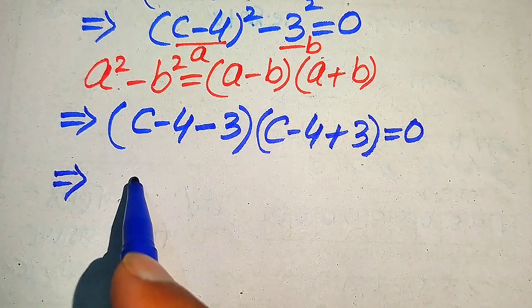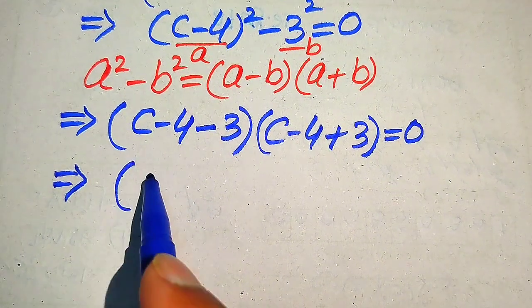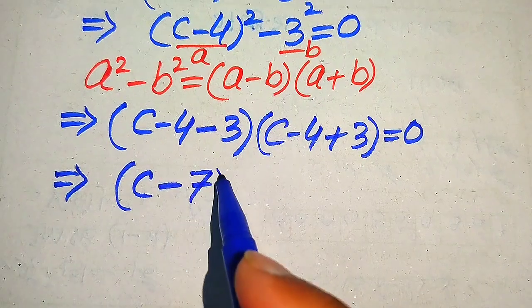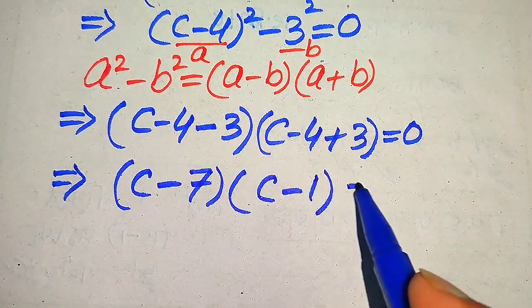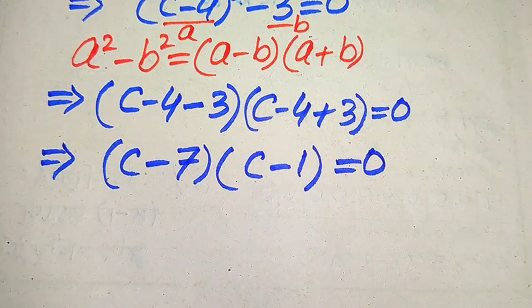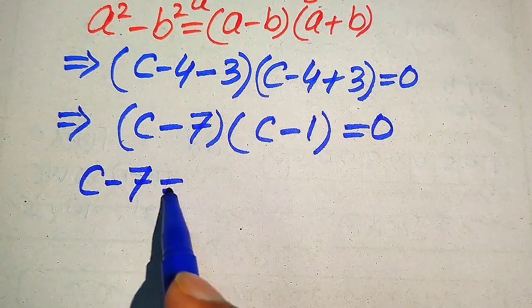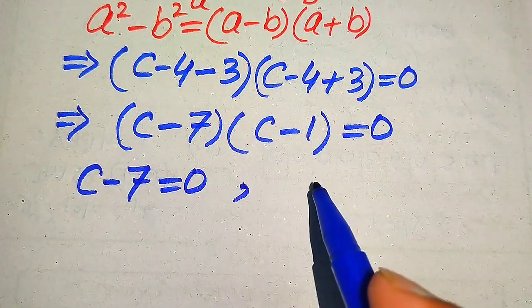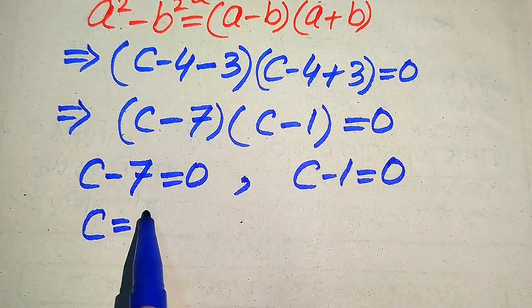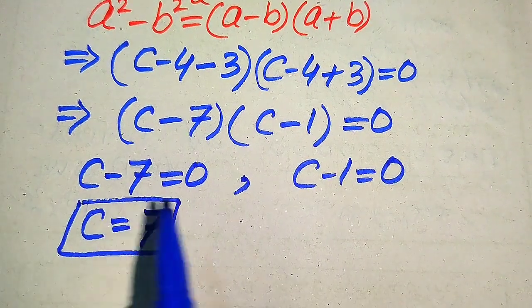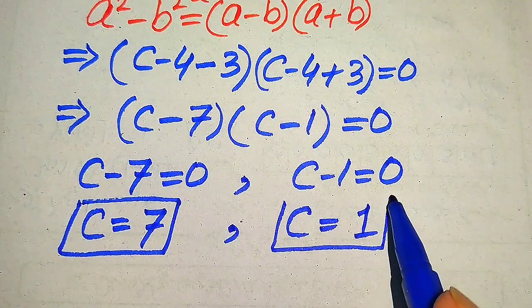After simplification, (C minus 4 minus 3) becomes (C minus 7) and (C minus 4 plus 3) becomes (C minus 1), so we have (C minus 7)(C minus 1) equals 0. We split into two cases: C minus 7 equals 0, giving C equals 7, and C minus 1 equals 0, giving C equals 1. These are the two roots from the first method.